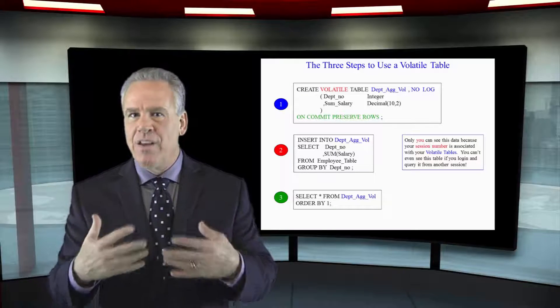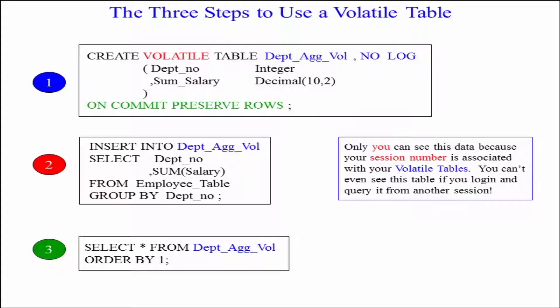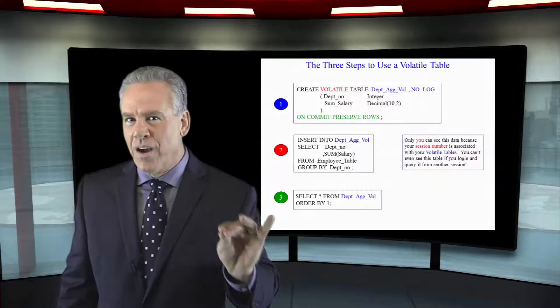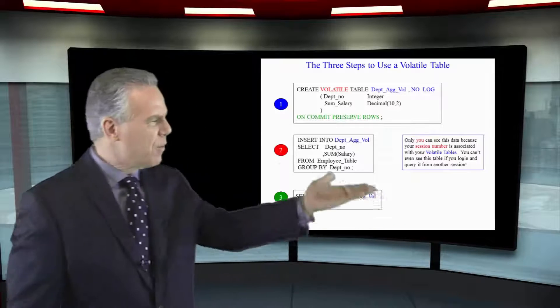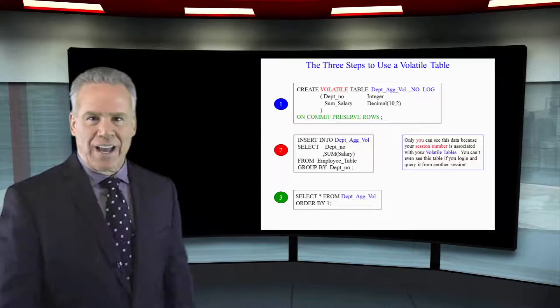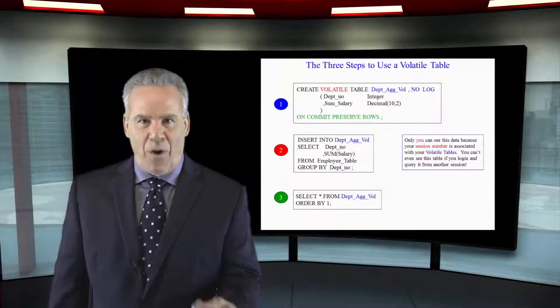Your spool space. But nobody else can see this table. Nobody. Only you because it puts your session number just in front of the table. So you don't even have to put what database that volatile table's in. It's going to be yours by default.